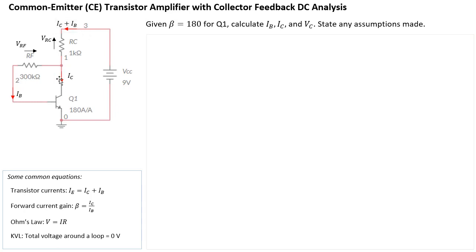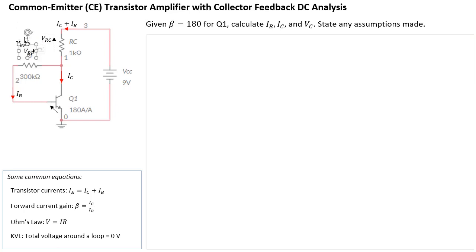Now we can form some equations. VCC is at the top. We can create an equation that links the voltage drop across RC, the voltage drop across RF, and the voltage drop VBE — the base-emitter junction. Remember, this is an NPN transistor, so VBE is positive in that direction. All of that adds up to VCC.